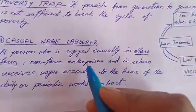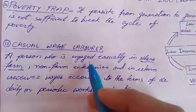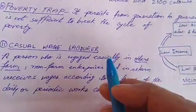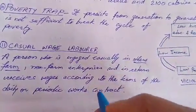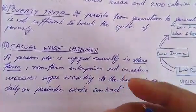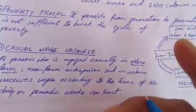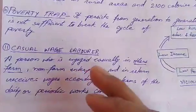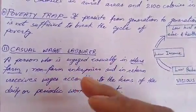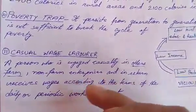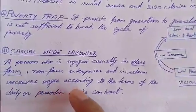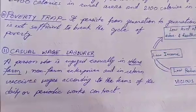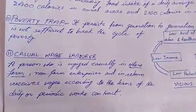Ab dekhte hain casual wage laborer kya hota hai — aise vyakti jo casual kaamon mein engage hote hain, jaise kisi aur ke farm mein jaake kaat rahe hain, gehu, chawal ki katni kar rahe hain. Yeh log casual wage laborer hain — jab zarurat hui chale gaye, jab nahi zarurat ghar baithe rahe. Person who is engaged casually in others' farm or non-farm enterprises and in return receives wages according to the terms of a daily or periodic work contract.